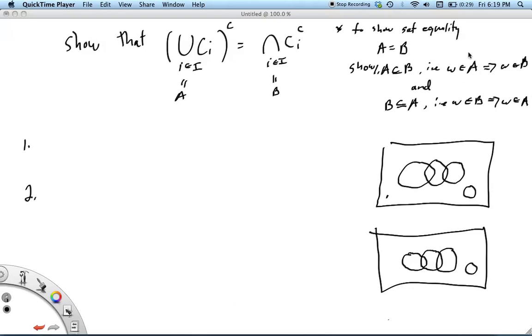meaning that omega in B implies that omega is in A. So we need to show that this implication is true. So let's just assume that omega is in A.